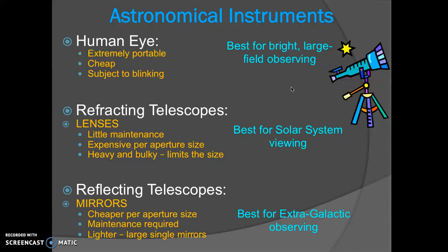We want to look at deep space, so that's when we use reflecting telescopes or telescopes with mirrors. They're cheaper per aperture size, meaning they're cheaper per the diameter size, but they do require some maintenance because a mirror is essentially a thin piece of glass with a coating over it, usually aluminum or gold, and that coating has to be reestablished every now and then. In general, reflecting telescopes are lighter and they allow for larger single mirrors, so they're really best for extragalactic observing.